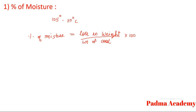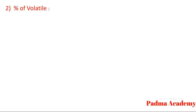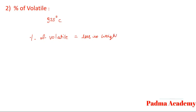The percentage of volatile matter is calculated by heating the coal sample at 925 degrees Celsius in the furnace for around seven minutes. Therefore, the percentage of volatile matter is equal to loss in weight upon weight of coal into hundred.